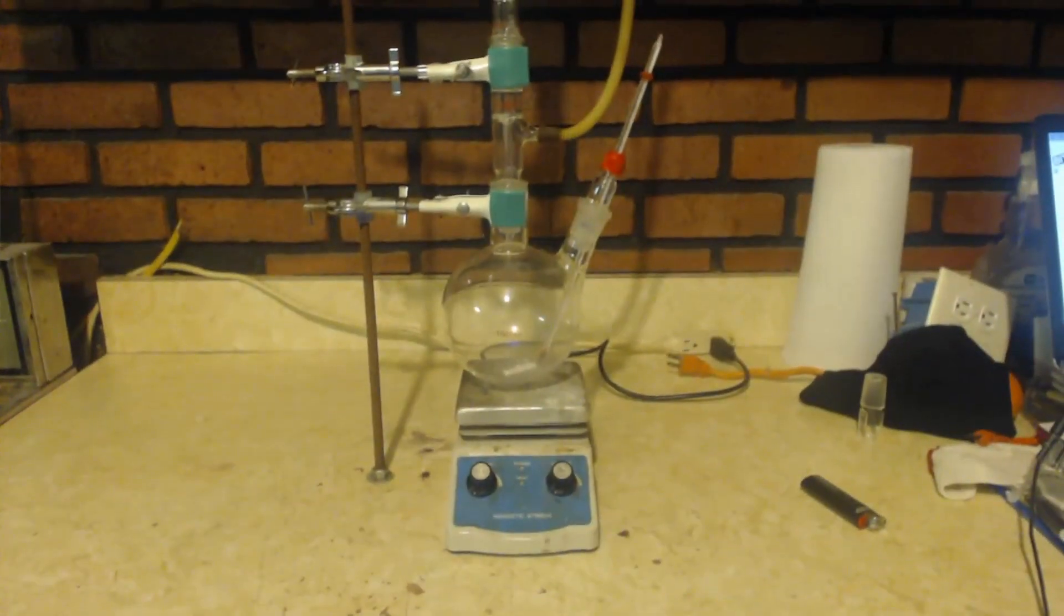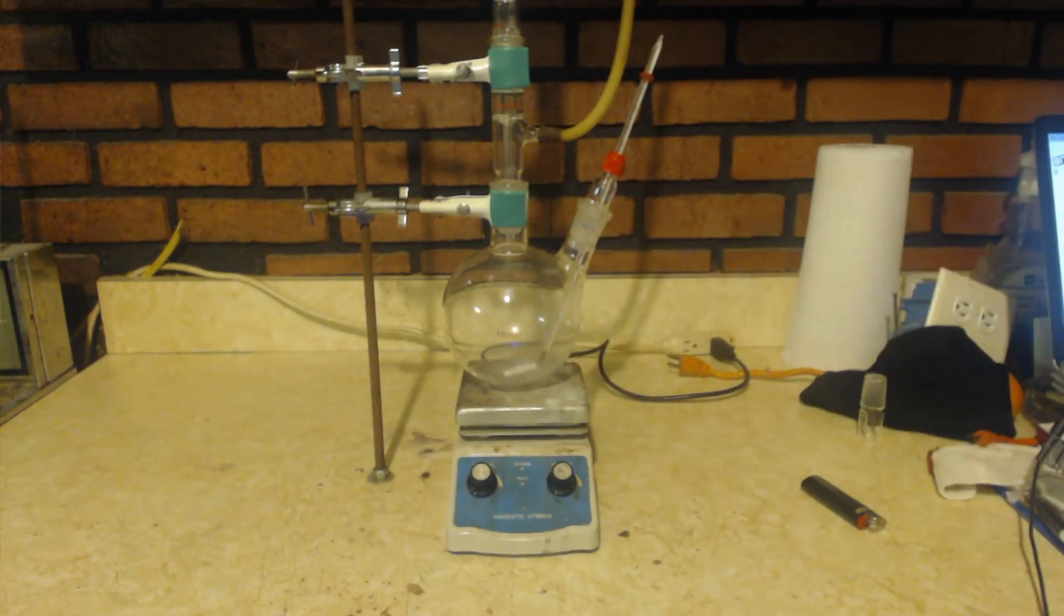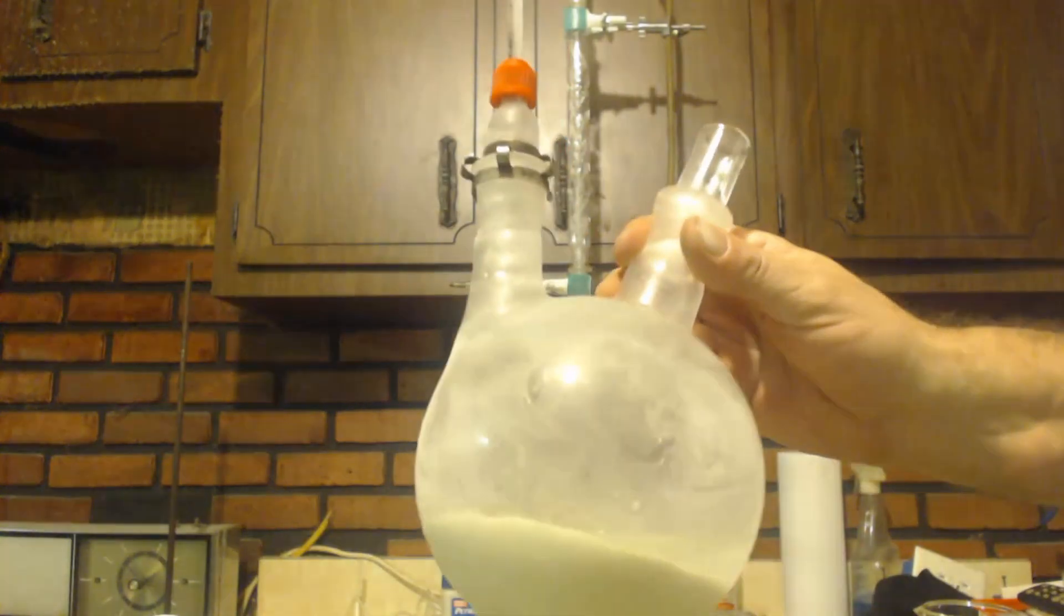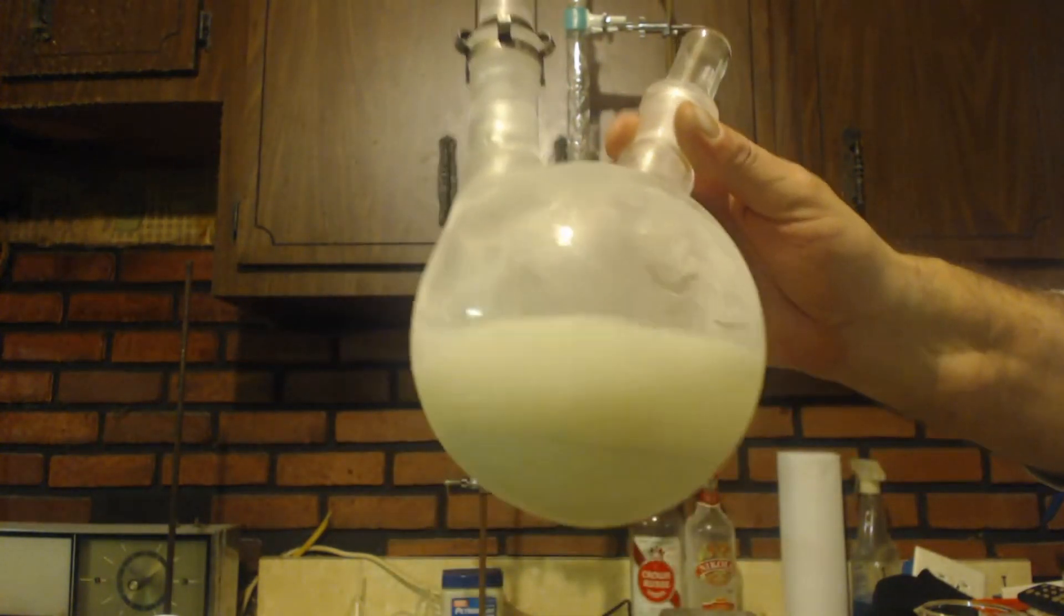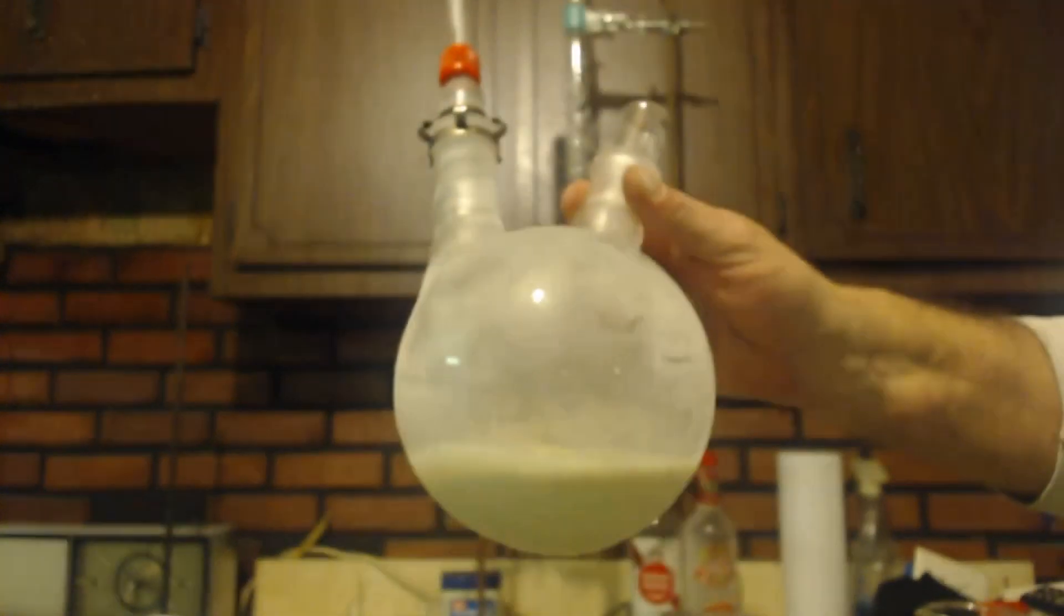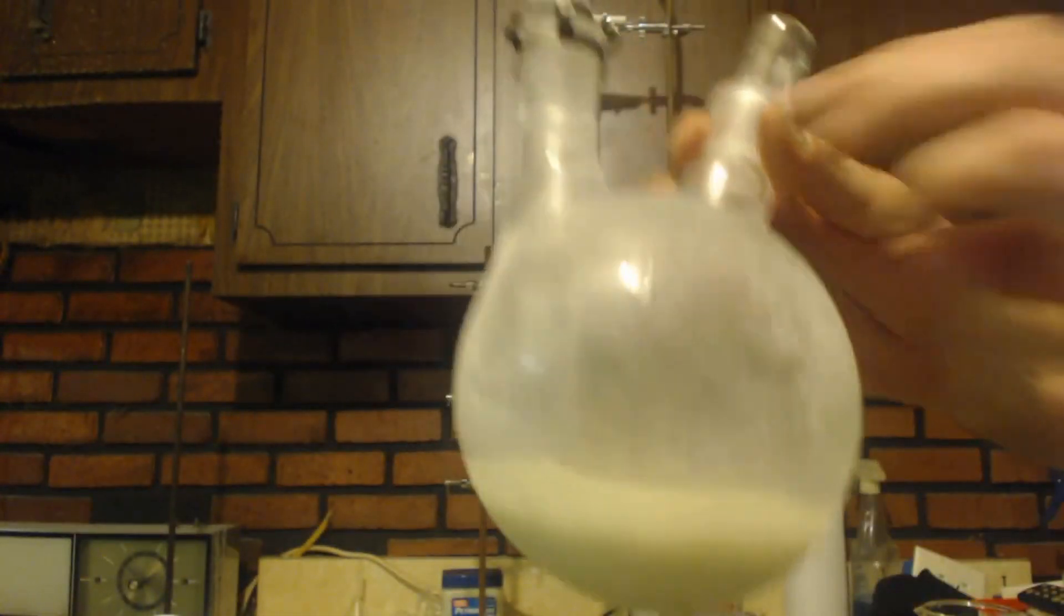So the first thing I'm going to do is I'm going to chill this down. This flask here. I'm going to take it off of here and put it in the freezer. Let it cool down. I have about 200 mils of diethyl ether in there. And you can see I got the silver nitrite.